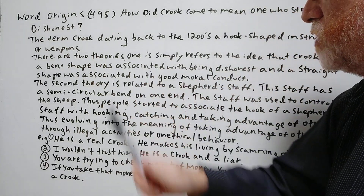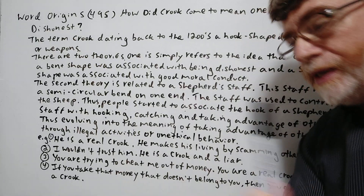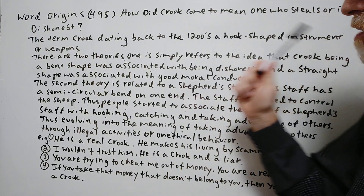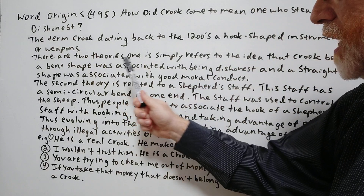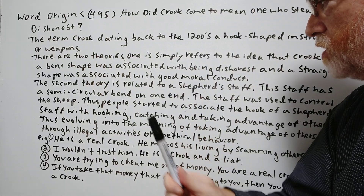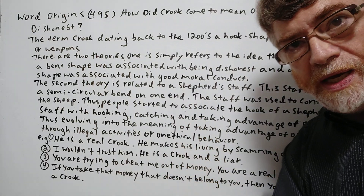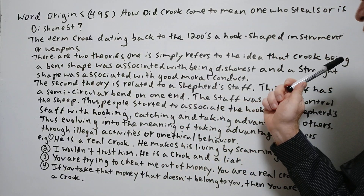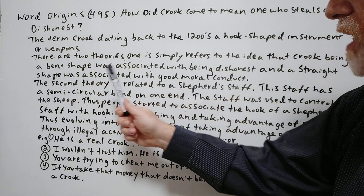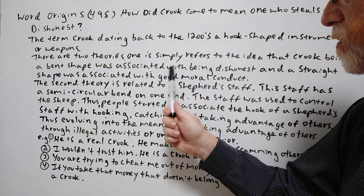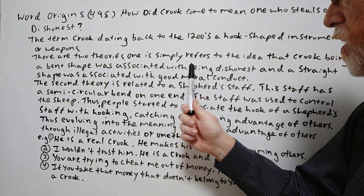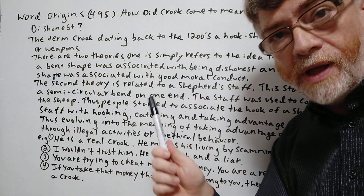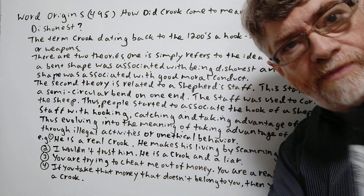There are two theories. The first is that 'crook,' being a bent shape, was associated with being dishonest, while a straight shape was associated with good moral conduct.